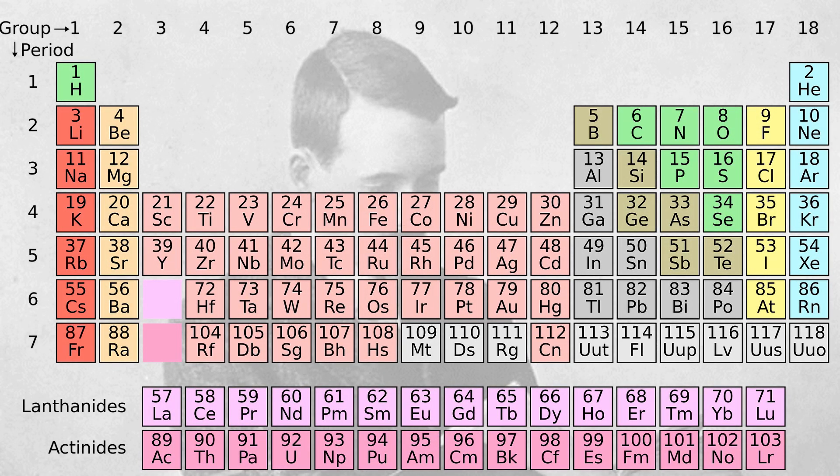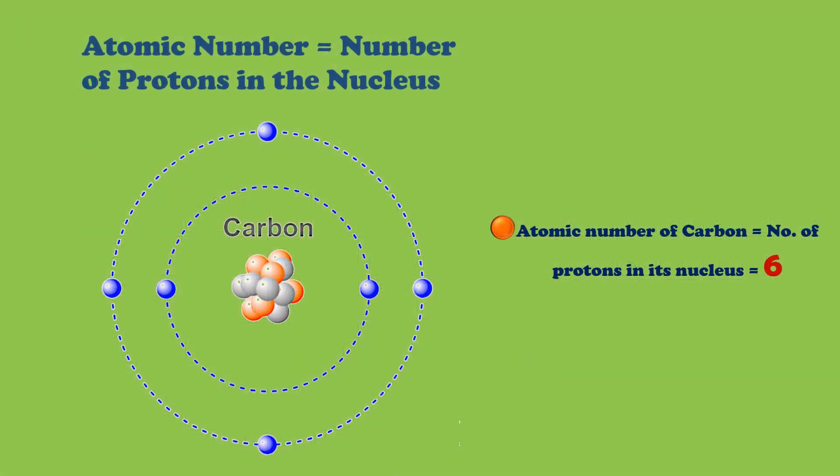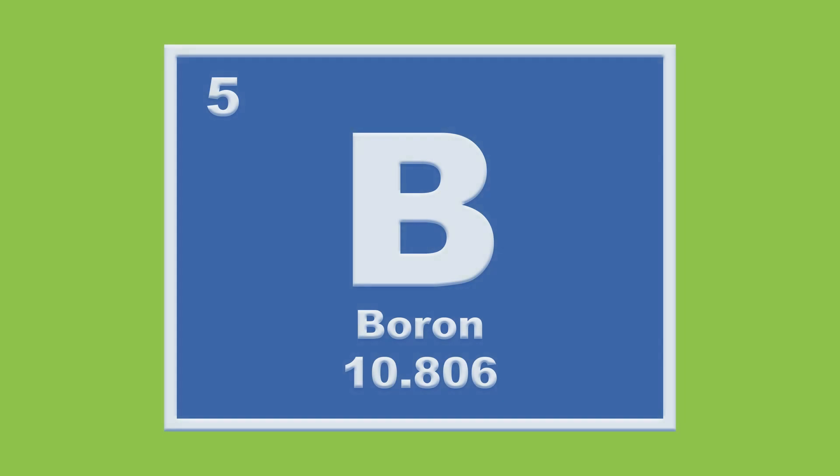But in 1913, another scientist Henry Moseley rearranged the periodic table according to the increasing order of their atomic number - the number of protons present in the nucleus of an element - because the chemical properties of an element are linked to the atomic number. In the periodic table, each element is contained in a small block. Information in the block includes the name of the element, its chemical symbol, atomic number, and atomic mass.